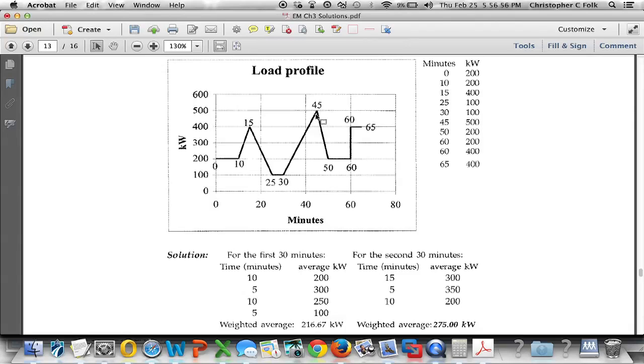And we can see that from time 45 to time 50, we went, you would add 500, that was the peak, to 200, which is 700. Again, there's two numbers divided by two, 350 kilowatts. And the last 10 minutes of these two 30 minute periods is from time 50 to time 60, where we use just 200.